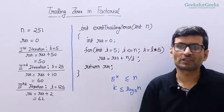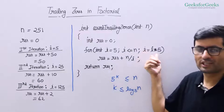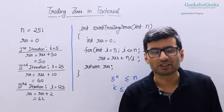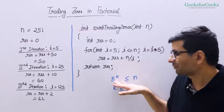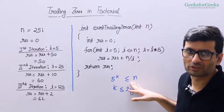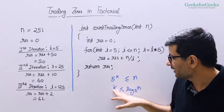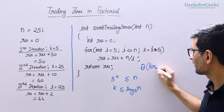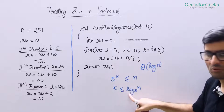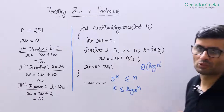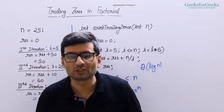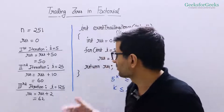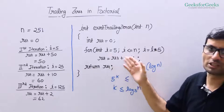Let's analyze the time complexity. We begin with i = 5^1, then 5^2, then 5^3, and so on. If the loop runs k times, then 5^k ≤ n, which means k ≤ log base 5 of n. So the time complexity of this solution is Θ(log n), which is less than the Θ(n) of the naive solution. It also solves the overflow problem because we never compute the factorial — we only divide n by multiples of five.